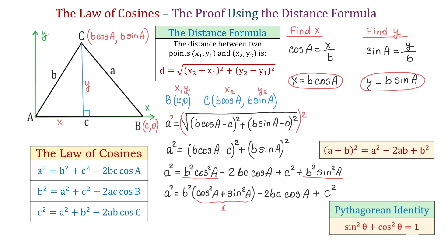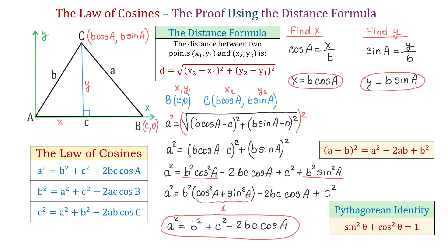So on the left side we have A squared equals B squared, and moving C squared after B squared, we have plus C squared minus 2BC cosine of angle A. And we just proved that A squared equals B squared plus C squared minus 2BC cosine of angle A. If you found this video useful, please click the like button and subscribe to the channel. Thank you for watching, and we'll see you next time.